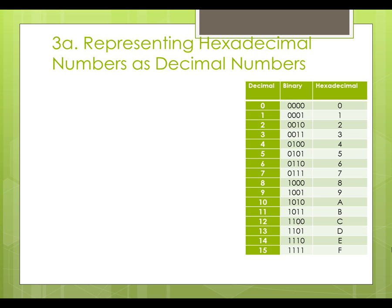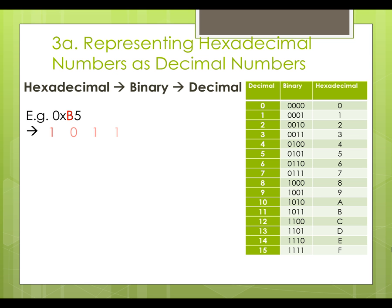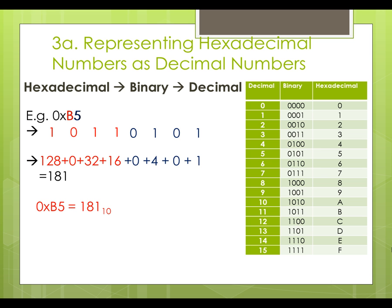To represent hexadecimal numbers as decimal numbers, we will firstly convert the hexadecimal number to its binary representation, and then from binary to its decimal representation. For example, we have hexadecimal number b5. Hexadecimal b can be represented by 1011, and hexadecimal 5 can be represented by 0101. Next, we multiply each bit with its multiplier and add the products together. The sum is 181. So hexadecimal b5 can be represented as 181 in decimal.